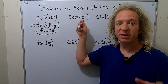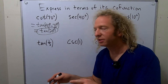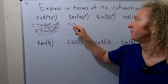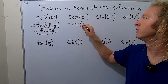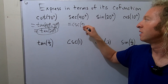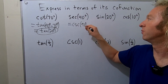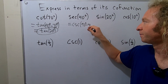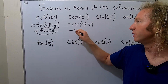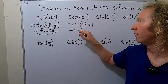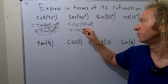Secant — its co-function is cosecant, so we put cosecant here. It's in degrees, so you do 90 minus 40. This will be equal to cosecant of 50 degrees. Boom, that's how pros do it.